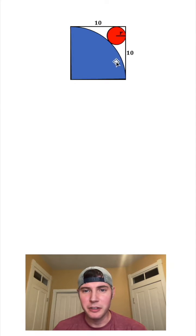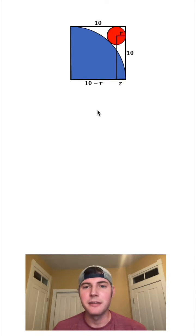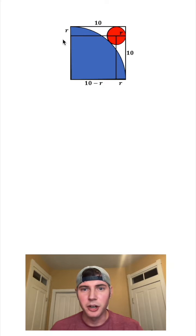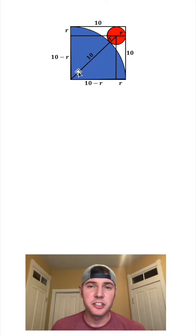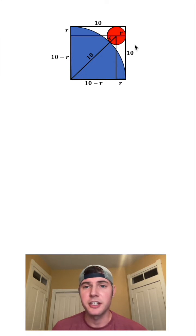First thing I would do is drop a line down here. We know this little side right here is also equal to R, which means this remaining side is going to be equal to 10 minus R. If we do the same thing from the center and bring a line across, this will also be equal to R and this would be equal to 10 minus R. If we draw a diagonal across here, this part in the blue circle is going to be equal to 10 because it's the radius of the blue circle, and this little piece in the red is going to be R because that's the radius of the red circle.